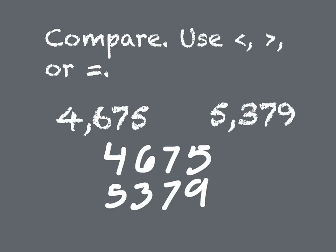So in our case here we have the 4 in the thousands place and the 5 in the thousands place. Well right off the bat we can see that the 5 is the bigger number. So we're going to come back up to our original problem and we're going to write it like this: 4,675 is less than 5,379.